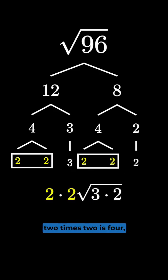And then when we simplify this, 2 times 2 is 4, and then 3 times 2 is 6. And that'll give us 4 times the square root of 6.